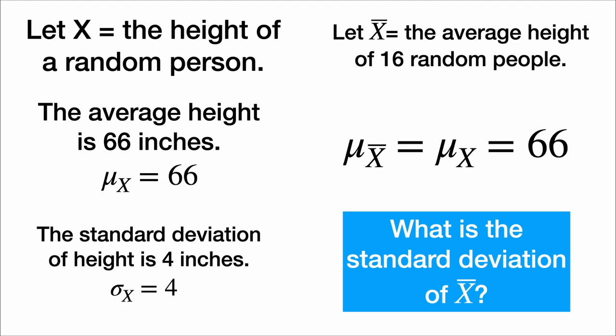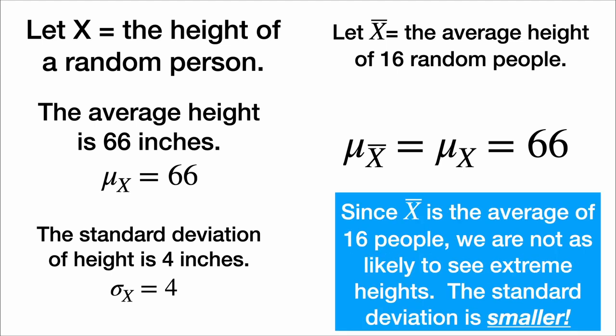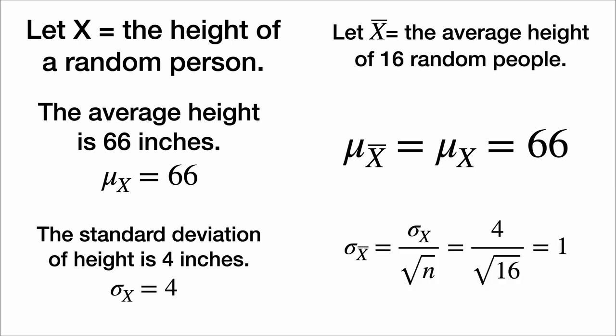But what is the standard deviation of x̄? Well, since x̄ is the average of 16 people, we are not as likely to see extreme heights. It would be very weird to see 16 random people whose average height was 6 feet 3. The standard deviation is smaller. The standard deviation of x̄ is the standard deviation of x divided by the square root of the sample size n. So here we have the standard deviation of x̄ being 4 over the square root of 16, or 1.